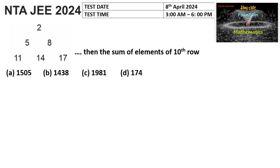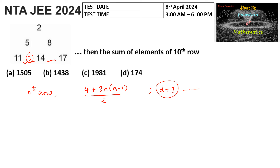In each row the elements form an arithmetic progression with common difference 3. The nth row has n elements, and its first element is 4 + 3n(n−1)/2. The sum of n terms of an AP is S = n/2 · [2a + (n−1)·d]. For the 10th row, we need the sum of 10 elements.